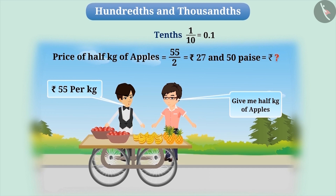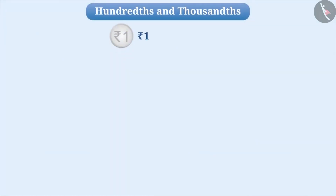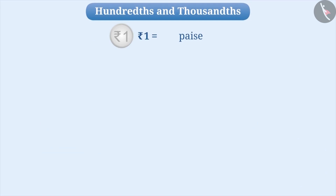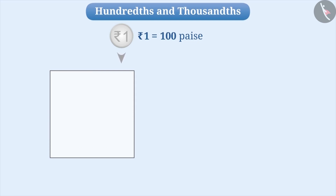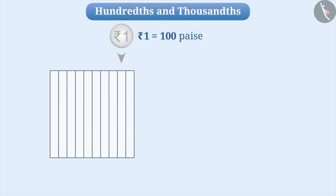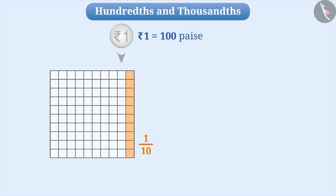Let us understand this in an interesting way. This is 1 rupee. Do you know how many paise makes 1 rupee? 1 rupee is equal to 100 paise. Let us assume one whole square represents 1 rupee. If we divide the square into 10 equal parts, then each part will have 1 tenth. If we divide each of the tenths parts into 10 equal parts, we will get a total of 100 equal parts. So 1 whole square is equal to 100 parts, meaning 1 rupee is equal to 100 paise.